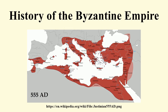Under Constantine, Christianity did not become the exclusive religion of the state, but enjoyed imperial preference, since the emperor supported it with generous privileges. Clerics were exempted from personal services and taxation, Christians were preferred for administrative posts, and bishops were entrusted with judicial responsibilities. Constantine established the principle that emperors should not settle questions of doctrine, but should summon general ecclesiastical councils for that purpose.